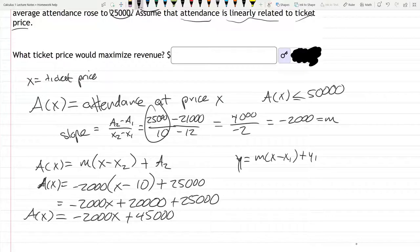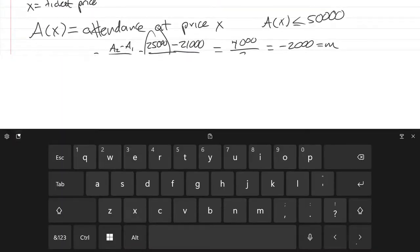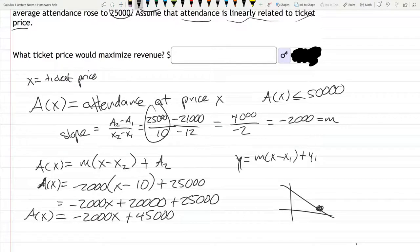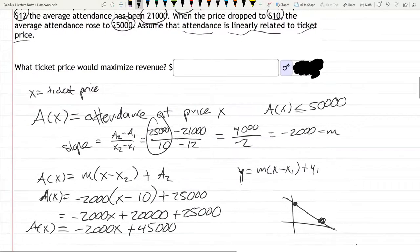This is our attendance function. This graph is going to look something like this: if your ticket price is too high, you're not going to have many fans show up. If your ticket price is too low, you have a ton of fans, but you won't make much money. Somewhere in between a high and low value is what we want.